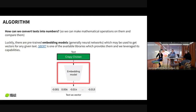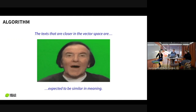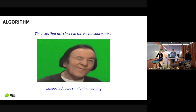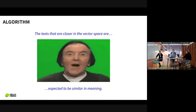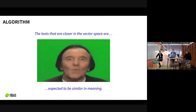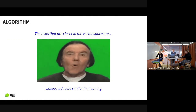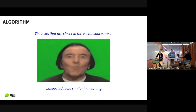One of the libraries is called Sentence Transformers, or short SWord, which is able to convert text into vectors. There is a very special thing about these vectors: if the texts are closer in the vector space, or the angle between them is small, we expect them to be similar in meaning.